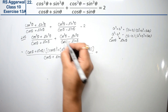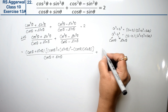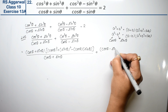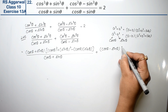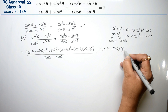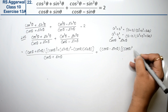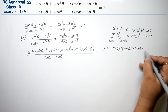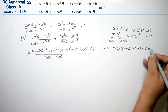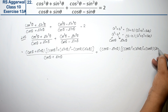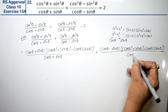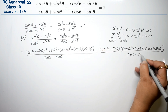Plus, applying the a³ - b³ formula to the second term, we get (cosθ - sinθ)(cos²θ + sin²θ + cosθ·sinθ), all divided by (cosθ - sinθ).